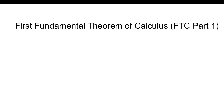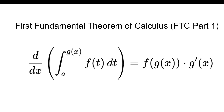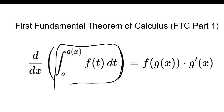Next, the First Fundamental Theorem of Calculus (FTC Part 1): the derivative with respect to x of the integral from a to g(x) of f(t) dt equals f(g(x)) times g'(x) — you substitute the upper bound in place of t and then multiply by the derivative of the upper bound. This appears in FRQs, and a common mistake is forgetting to multiply by the derivative of the upper bound.